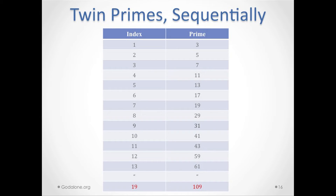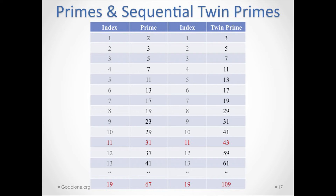You can do the twin primes sequentially, and you see the 19th one is 109. I keep referring to 19 — it will become clear after the intermission why I highlight this. You can also put primes and twin primes together, and as you see, there are a lot fewer twin primes than there are primes. The 19th prime is 67, but the 19th twin prime is 109 — so twin primes get bigger a lot faster.